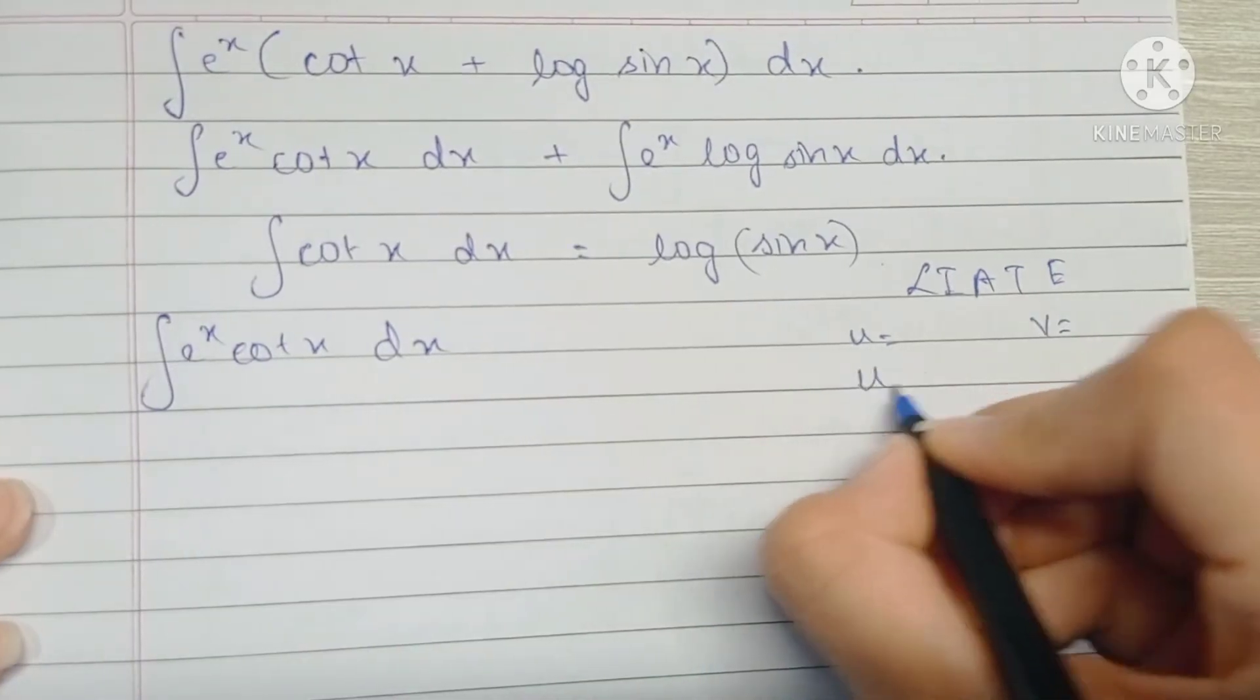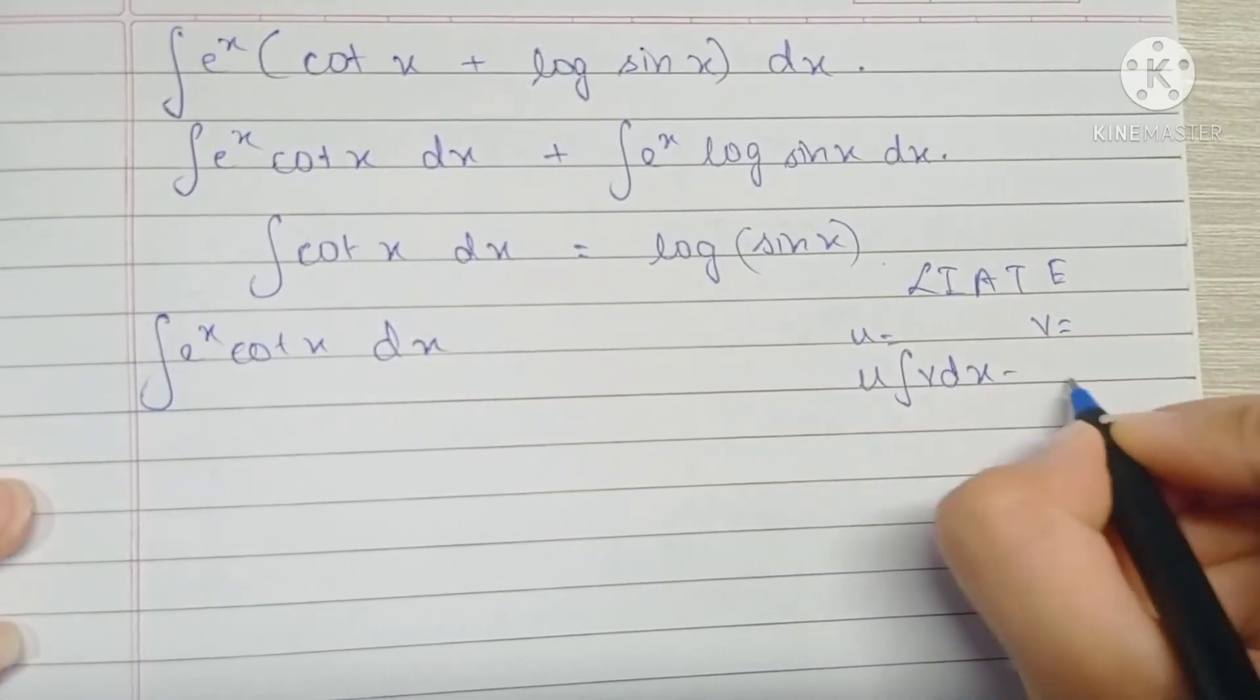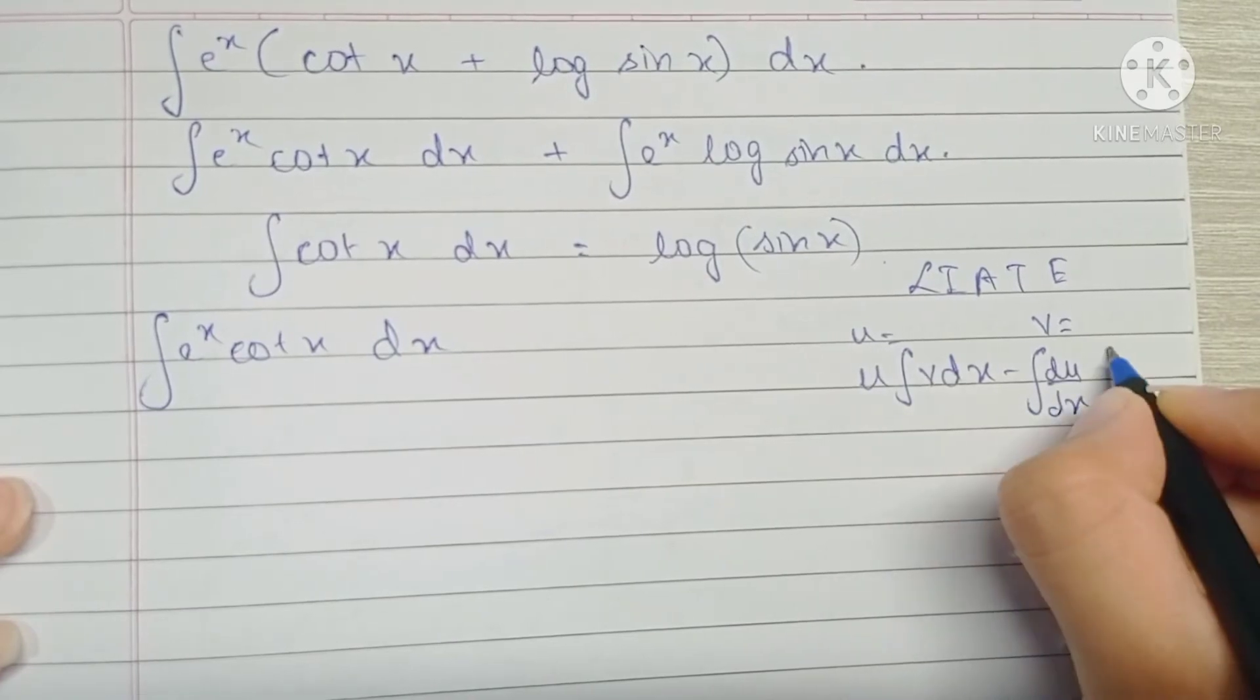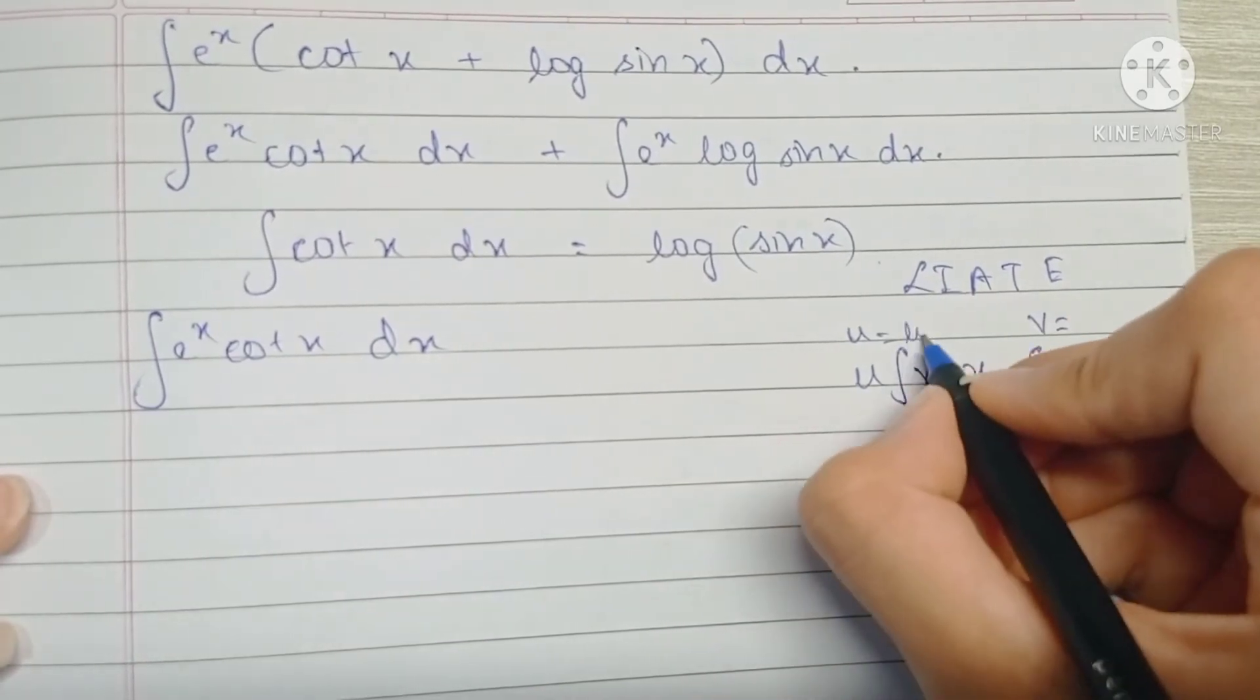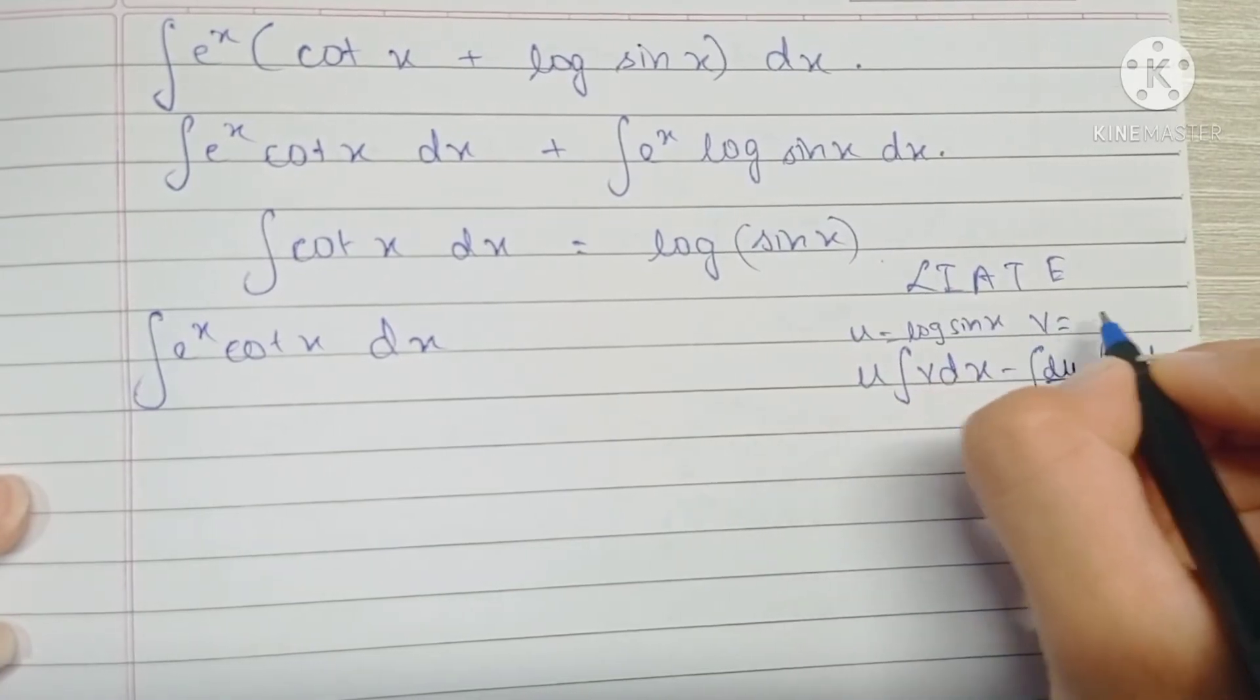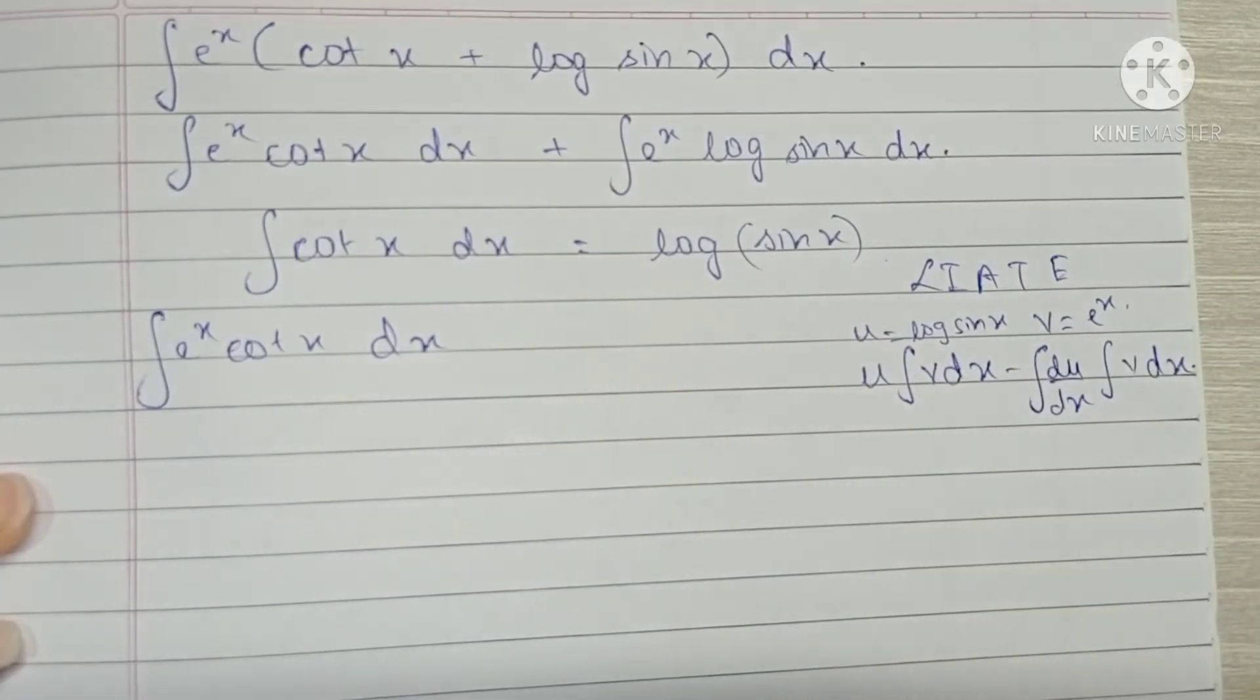So the formula is u into the integral of v dx minus the integral of differentiation of u into the integral of v dx. Here we're going to place log sin x as u and e raised to x as v using the LIATE rule.